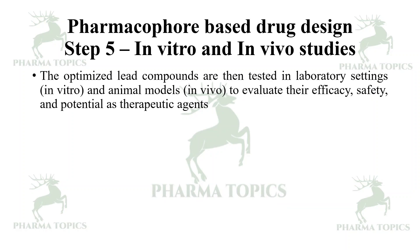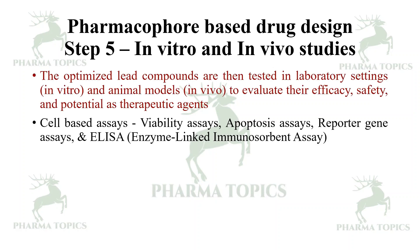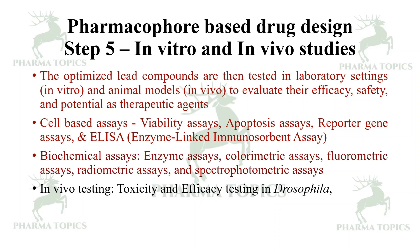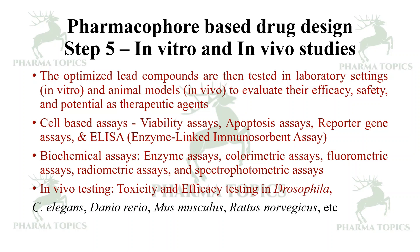The optimized lead compounds are then tested in laboratory settings — in vitro or in vivo — to evaluate efficacy, safety, and potential as therapeutic agents. They are analyzed by cell-based assays including viability assays, apoptosis assays, reporter gene assays, and ELISA. Biochemical assays include enzyme assays, calorimetric, fluorimetric, radiometric, and spectrophotometric assays. In vivo testing involves toxicity and efficacy testing in Drosophila, C. elegans, Danio rerio, Mus musculus, Rattus norvegicus, dogs, and primate models.